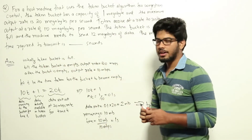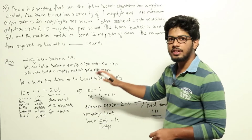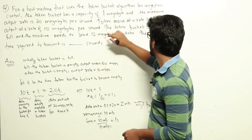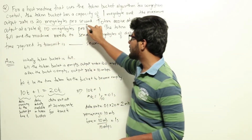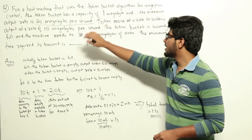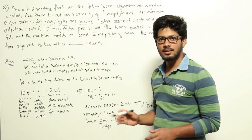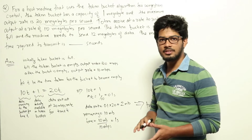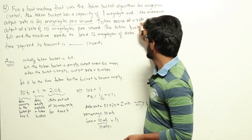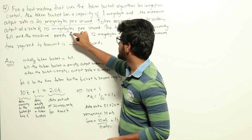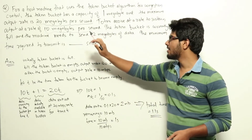Initially the token bucket is full, so we can have an output rate of 20 megabytes per second. When we have tokens available in the bucket, we can keep an output rate of 20 megabytes per second until the tokens in the bucket become empty. After the tokens are empty, tokens arrive at a rate of 10 megabytes per second.